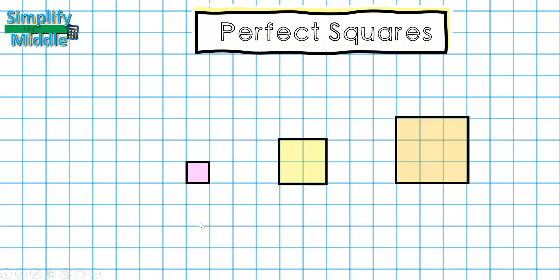Let's take a closer look at what it means to be a perfect square. If we look at the pink square, we notice that the length is 1 and the width is 1. We also notice inside the square, there is 1 box. So 1 would describe the perfect square here.